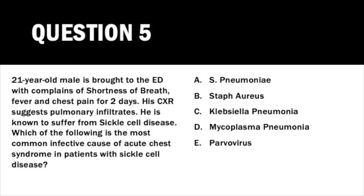Question 5: Which of the following is the most common infective cause of acute chest syndrome in patients with sickle cell disease? Options: Strep pneumoniae; Staph aureus; Klebsiella pneumoniae; Mycoplasma pneumoniae; Parvovirus. Clinical stem: a 21-year-old male presents with shortness of breath, fever, and chest pain for two days. His chest x-ray shows pulmonary infiltrates and he is known to have sickle cell disease. This is not a trivial question — it is one you should remember for your entire clinical career.